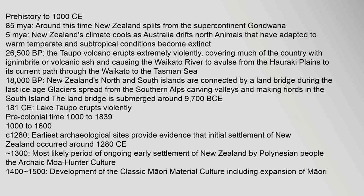26,500 BP: The Taupo volcano erupts extremely violently, covering much of the country with ignimbrite or volcanic ash and causing the Waikato River to avulse from the Hauraki Plains to its current path through the Waikato to the Tasman Sea.